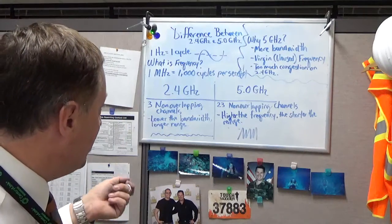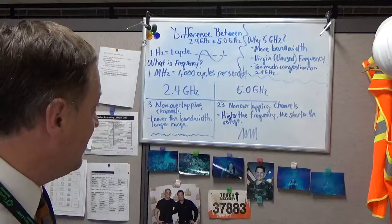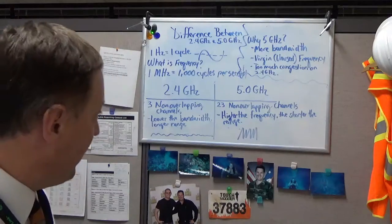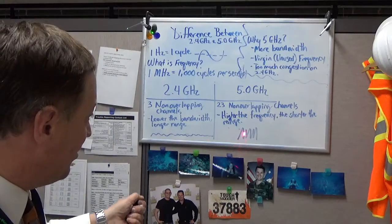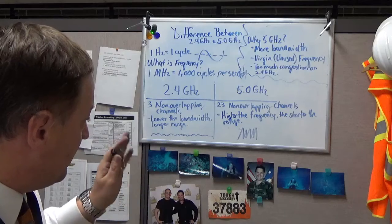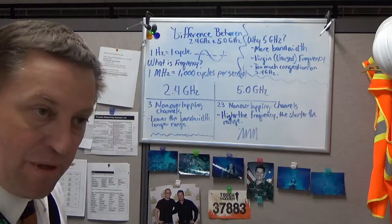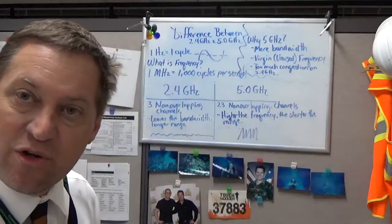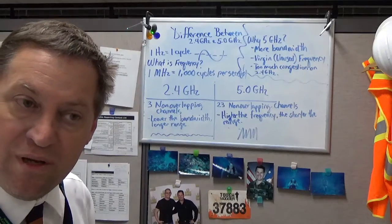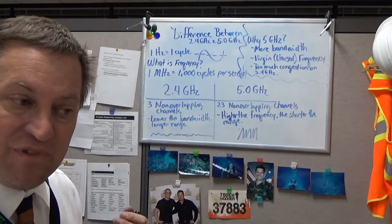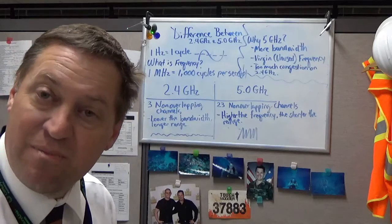So in this case, the relationship is higher frequency, the shorter the range. So I look at this little drawing here where I have a much shorter wavelength, but I'm having more cycles per second. So you're able to push more data through, but your distance that it's going to travel is much shorter.